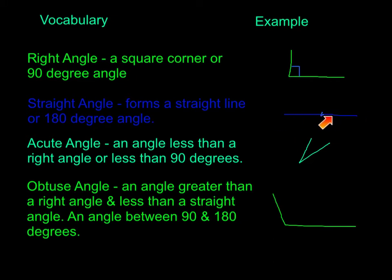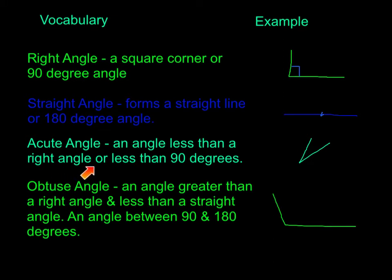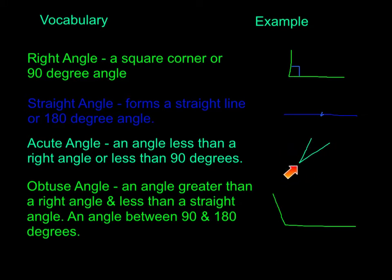An acute angle is an angle less than a right angle, or less than 90 degrees. So an acute angle is going to be less than 90 degrees — like this example here.